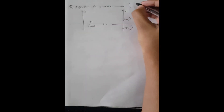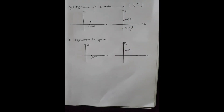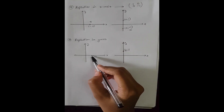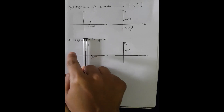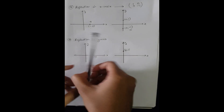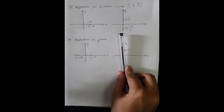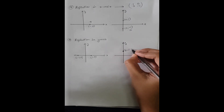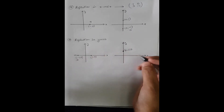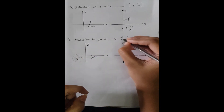So the matrix for reflection in the x-axis is [1, 0; 0, -1]. For reflection in the y-axis, the point (1, 0) will move to the opposite quadrant, that is (-1, 0), but the point (0, 1) will remain in the same position. So the matrix will be [-1, 0; 0, 1].